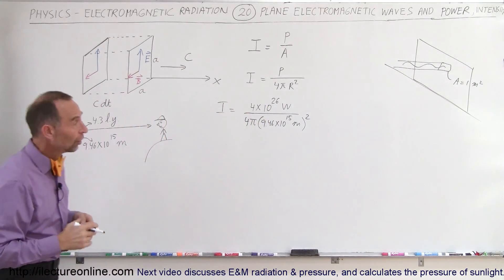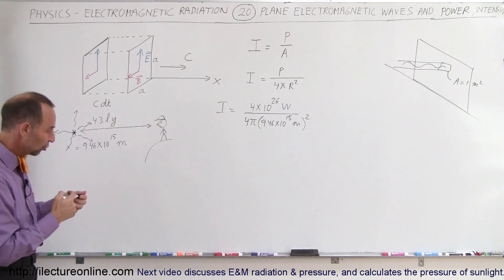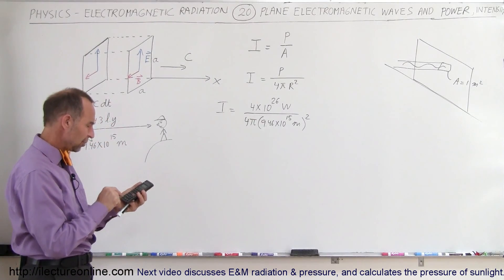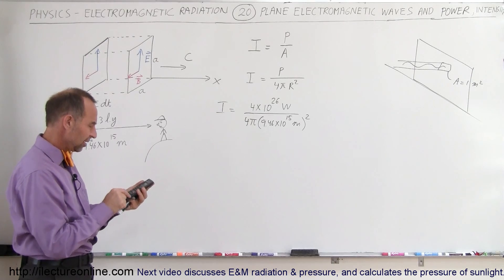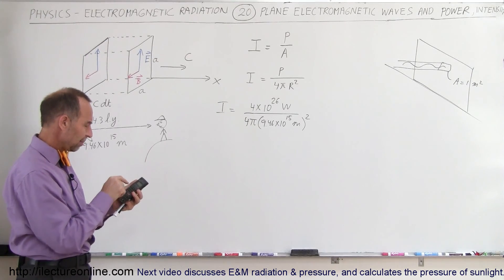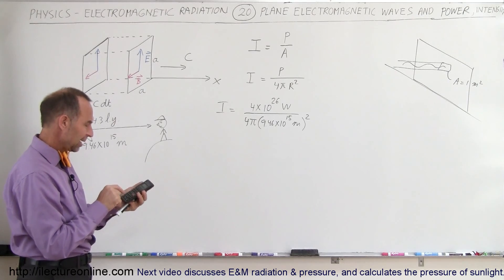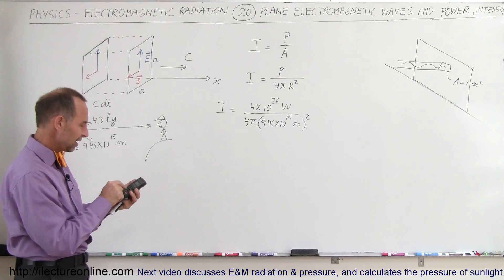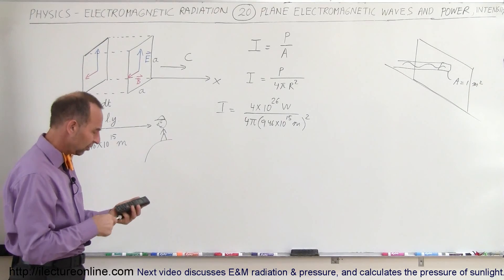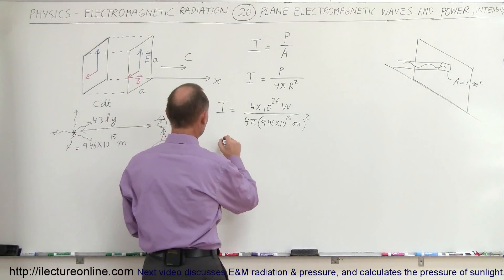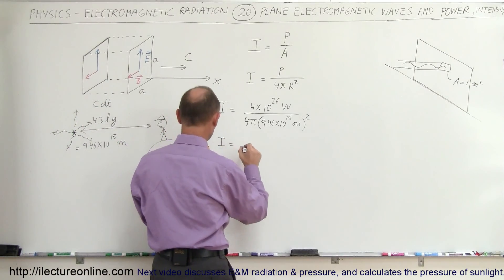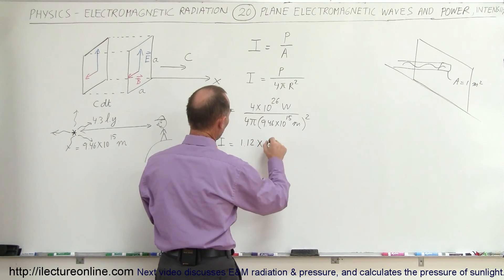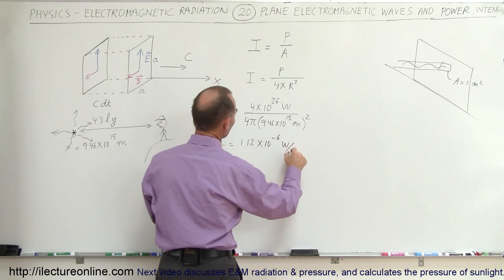We get watts per meter squared — that's the unit for intensity. So we calculate: 4 times 10 to the 26th, divided by 4, divided by π, divided by 9.46 times 10 to the 15th, squared. The intensity of the light coming from Alpha Centauri is 1.12 times 10 to the minus 6 watts per square meter.